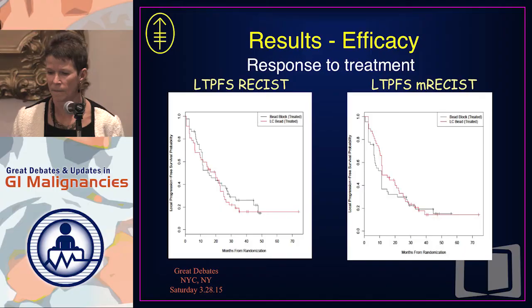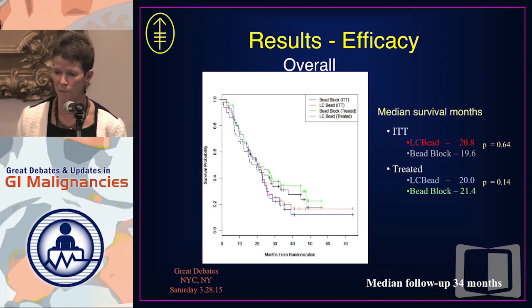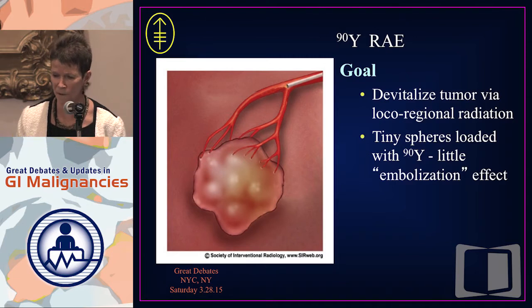This is our data looking at drug-eluting beads and hepatic arterial embolization — a study we just completed. We found no difference in any measure of effect. The primary endpoint was response to treatment at two to three weeks; there was no difference at that time point or any time point, nor any difference in progression-free survival or overall survival. The local response by RECIST and mRECIST and the survival data both showed no difference, whether intent-to-treat or treated patients.